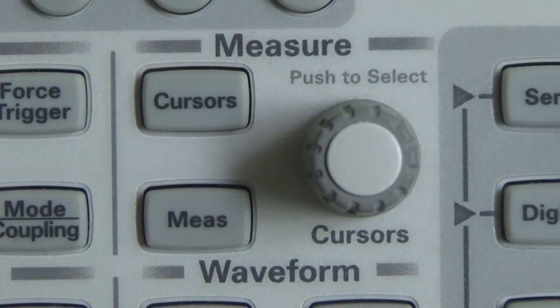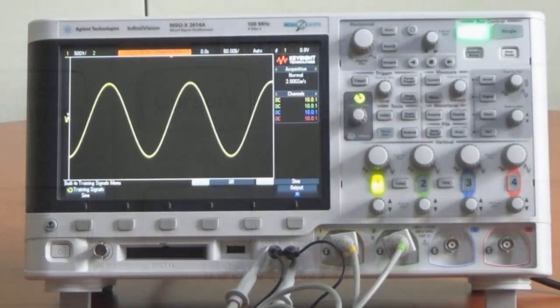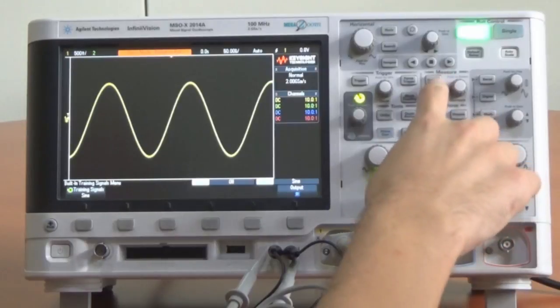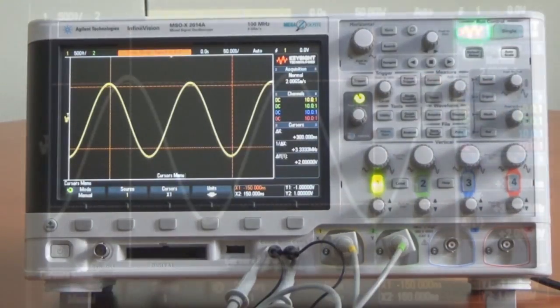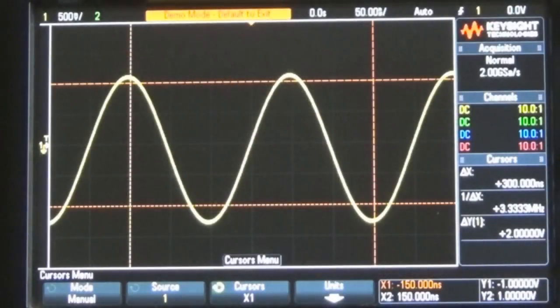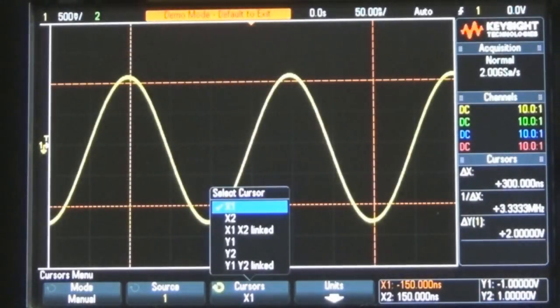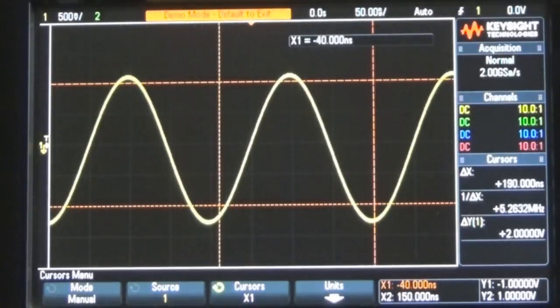En primer lugar localice visualmente la perilla Cursors en la sección visual del panel frontal. A continuación presione la perilla Cursors hasta que el cursor X1, que es el marcador de tiempo número 1, se cruce con un borde ascendente de una onda sinusoidal a un nivel de voltaje particular. Como consejo, alinear el cursor en un punto de la forma de onda donde cruza una de las líneas de la retícula horizontal.